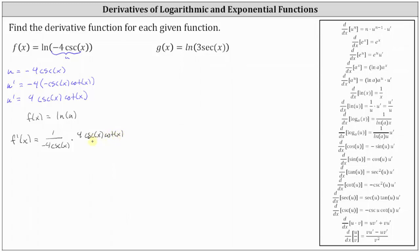We can write this as a fraction, and notice we can simplify. Four divided by four simplifies to one, and cosecant x divided by cosecant x also simplifies to one. Notice there is a negative sign, and therefore we have negative one times cotangent x. So f prime of x is equal to negative cotangent x.